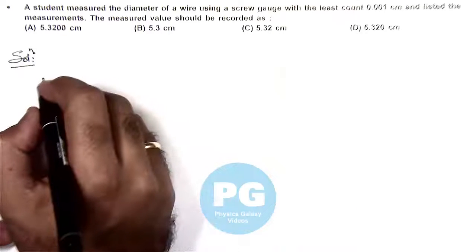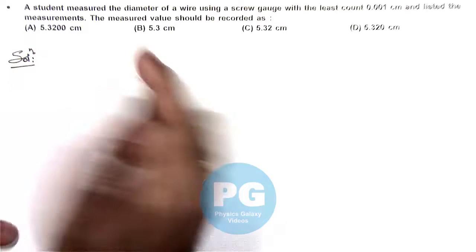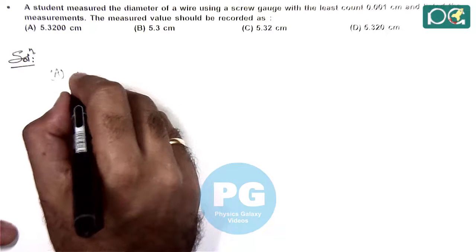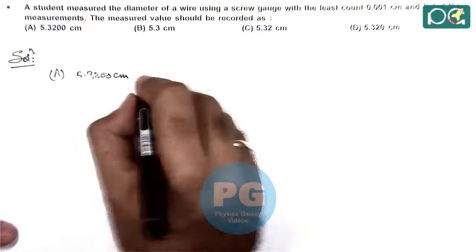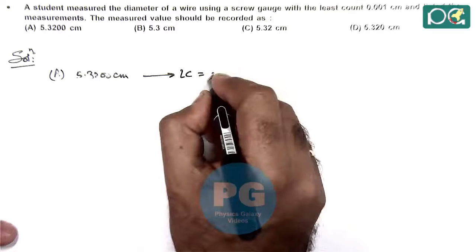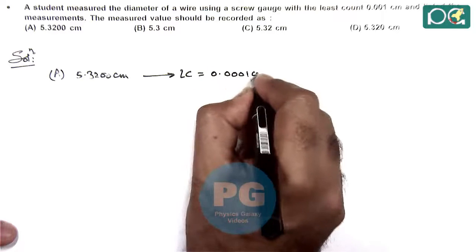So we can just check the least count of all the four readings here. If we check option A, if reading is 5.3200 centimeter, then here we can see least count is the last digit, if we consider it as 0.0001 centimeter.